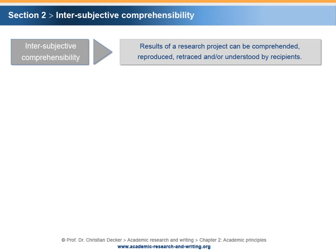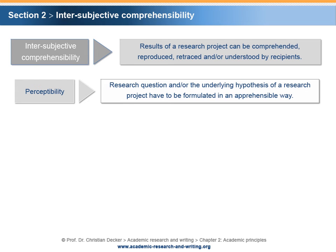Now, there are five aspects that can be used in order to determine whether the research output is intersubjectively comprehensible. The first is Perceptibility. Perceptibility means that the research question and/or the underlying hypothesis of a research project have to be formulated in an apprehensible way. If no one understands what your research is about, it is not intersubjectively comprehensible.